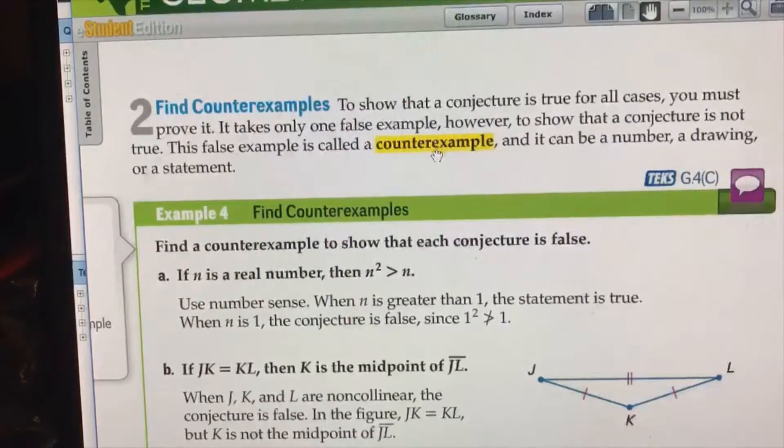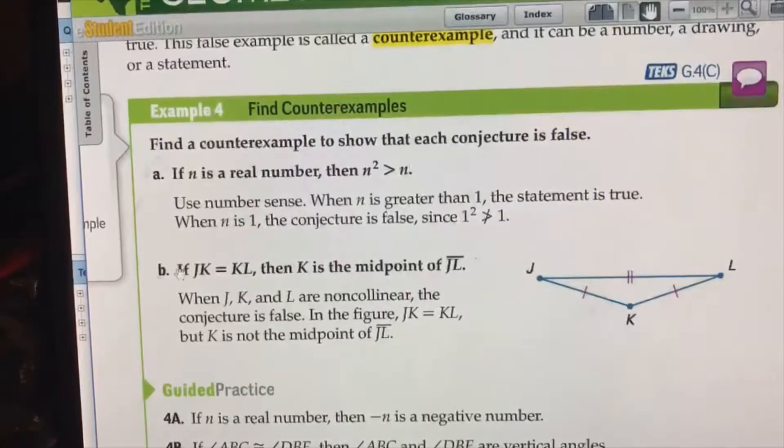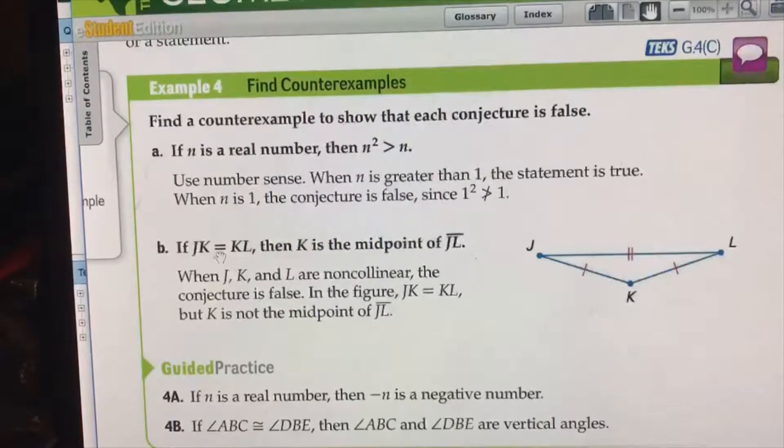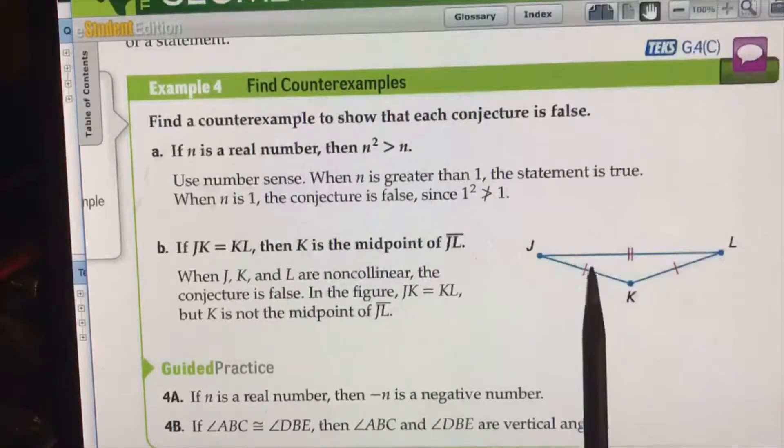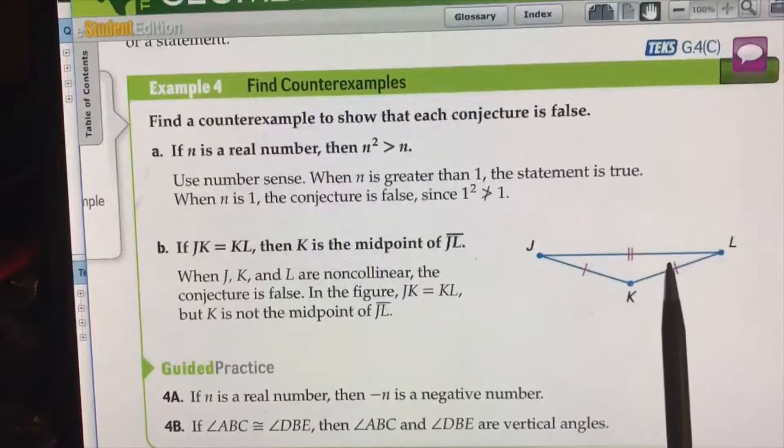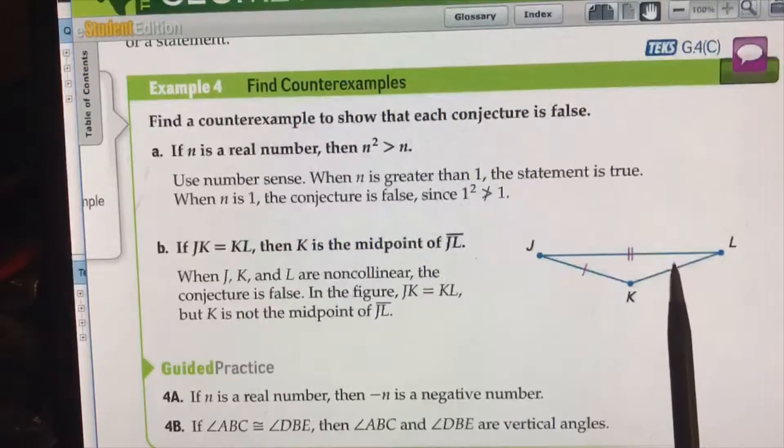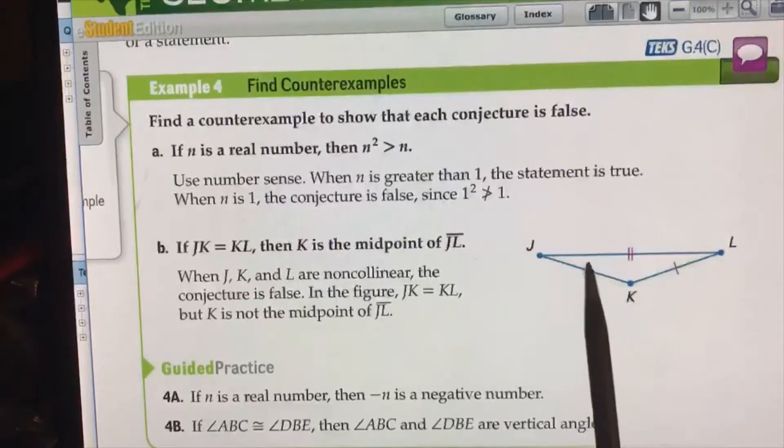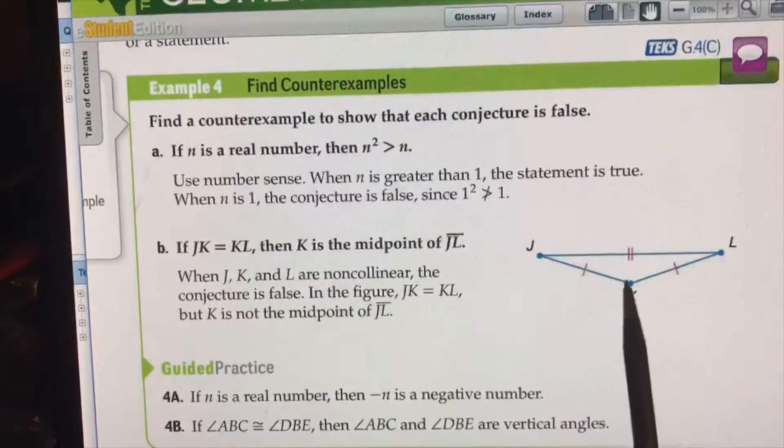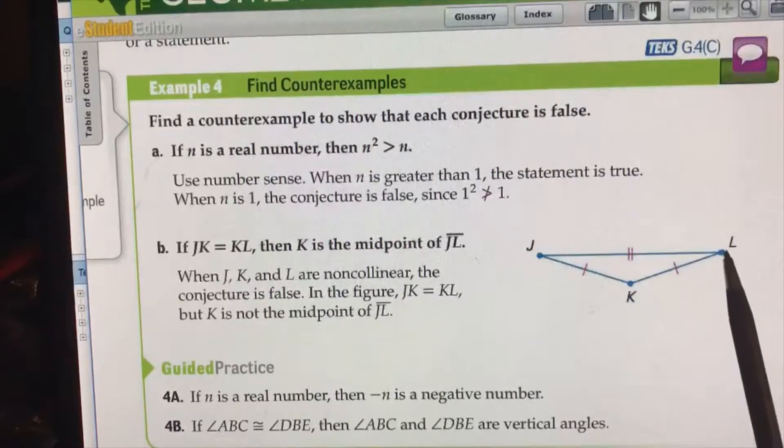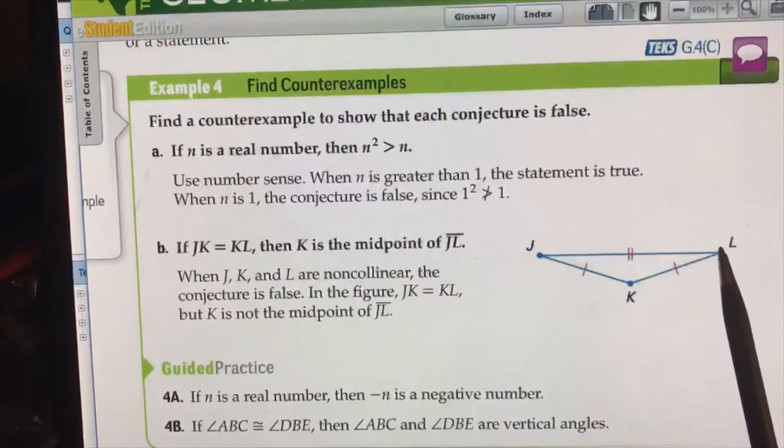Example B: If JK equals KL, you'll see a red mark like that. Typically you'll see another one. What that is doing is telling you the reader that when you see one mark and one mark, this segment and this segment are equal. That's how you show it on the diagram.